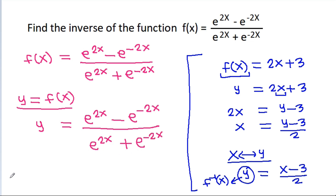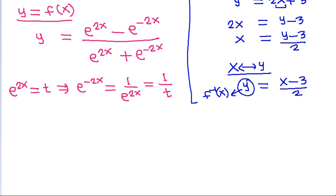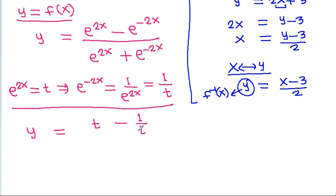Suppose e^(2x) = t, then e^(-2x) = 1 / e^(2x) = 1/t. So y = (t - 1/t) / (t + 1/t).